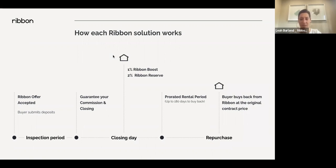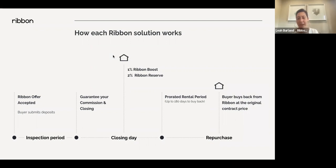Ribbon reviews the inspection report within 24 hours. We're looking for safety and structural issues — cracks in the foundation, windows and doors that don't open and close properly, non-working smoke detectors, exposed wiring, leaks. We want to make sure the home is safe, especially if we're purchasing and the buyer is renting from us. Ribbon-required repairs must be completed prior to closing if Ribbon is purchasing the property. If the buyer uses Ribbon Boost and closes on their own, those repairs are not required.